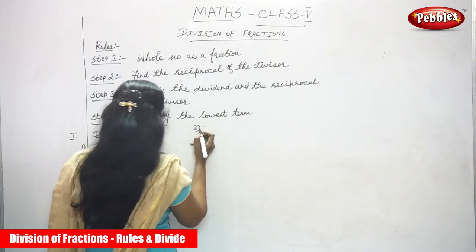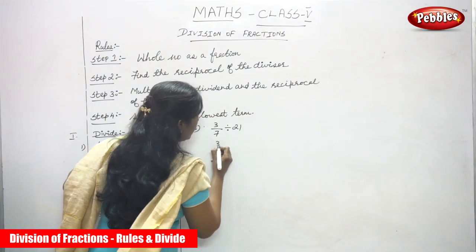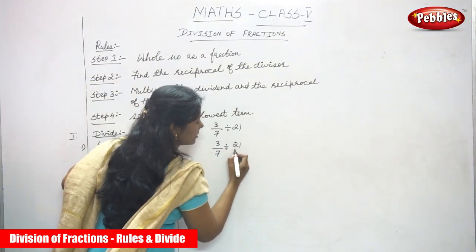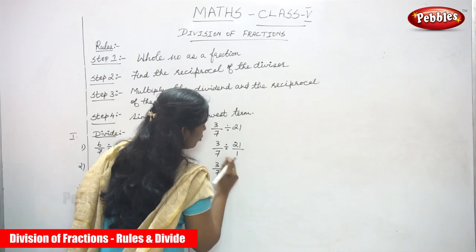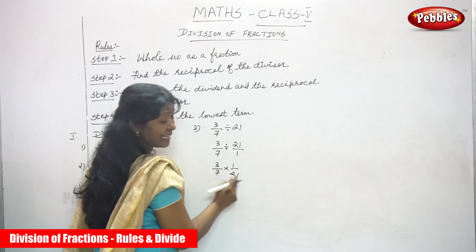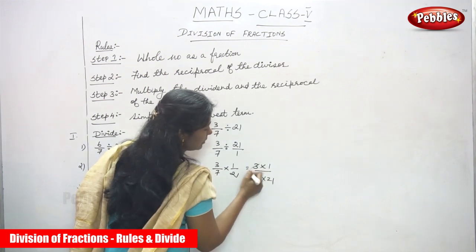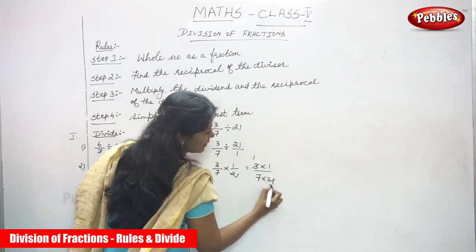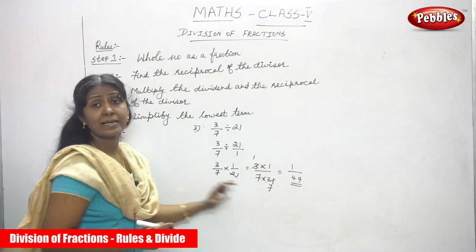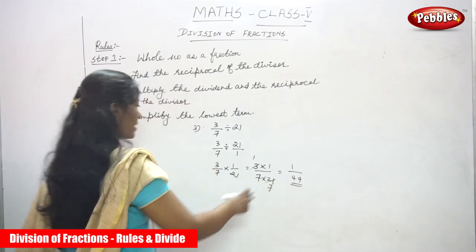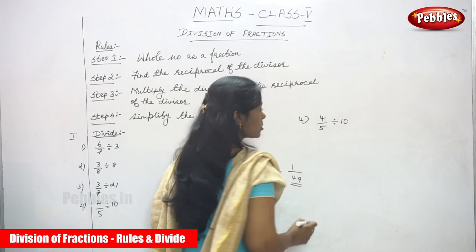Third sum: 3/7 divided by 21. Here 3/7 is a fraction and 21 is a whole number. Convert 21 to a fraction: 21/1. The dividend is 3/7 and the reciprocal of the divisor is 1/21. Multiply: 3 × 1 over 7 × 21. Cross-cancel: 3 into 3 gives 1, 3 into 21 gives 7. So 1 × 1 over 7 × 7 = 1/49. The answer is 1/49.